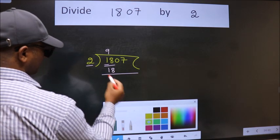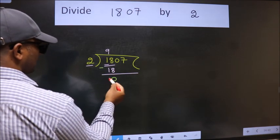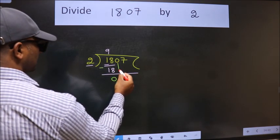Now we should subtract. We get 0. After this, bring down the beside number.